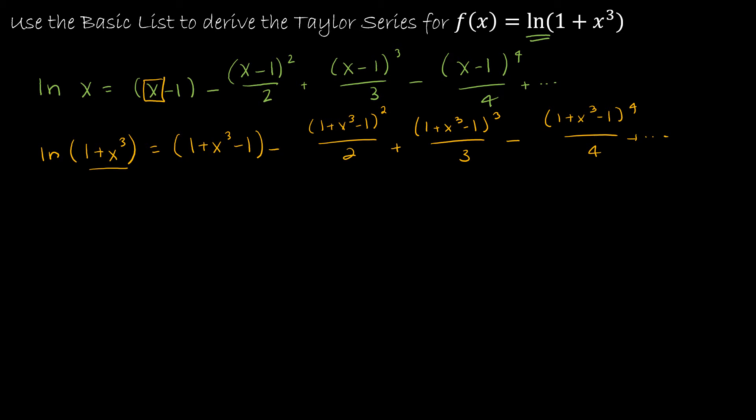And then simplify. So I can simplify this: 1 and negative 1 cancel out and that gives me x³. And this 1 and negative 1 cancel out and so that gives me x cubed squared, which is x to the sixth over 2. Then 1 and negative 1 cancel out: x cubed to the third, which is x to the ninth over 3. And then the ones cancel out, giving me x cubed to the fourth, or minus x to the 12th over 4.